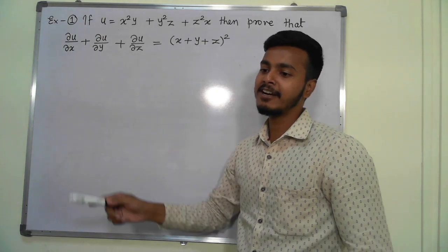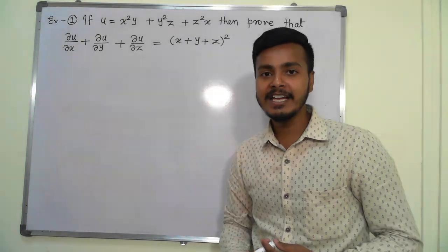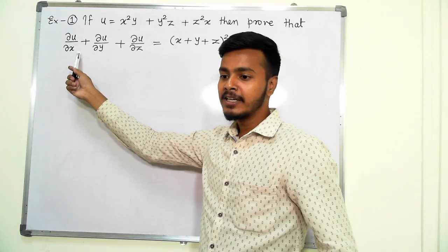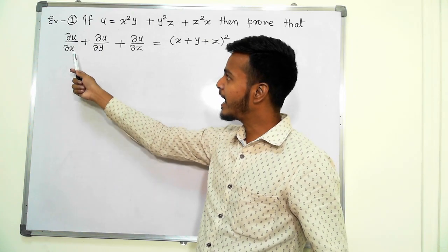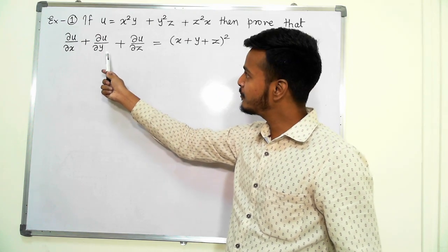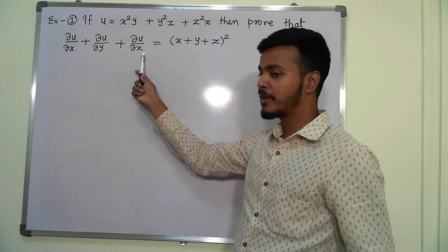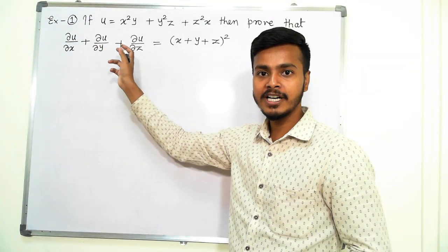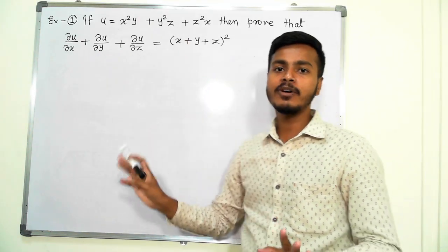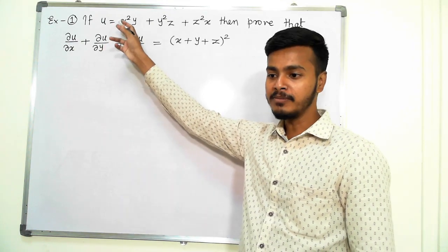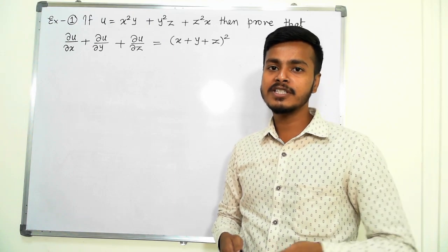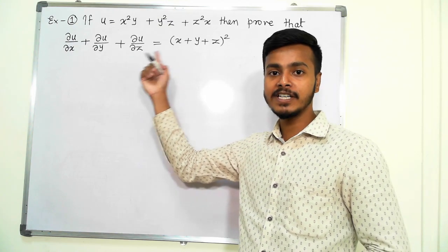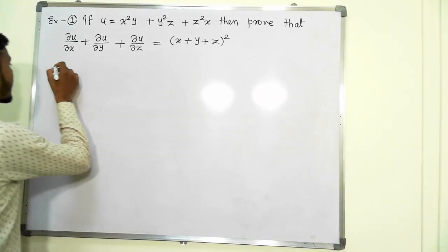Problems of the proof type are very simple because they give you an idea of where to start and where to end. By looking at this problem, I get the idea that I have to start with del u by del x, then find del u by del y, then del u by del z — getting three partial derivatives — and then sum those together. That is what this question demands. So the roadmap is clear: differentiate partially with respect to x, y, and z and try to get the required result.